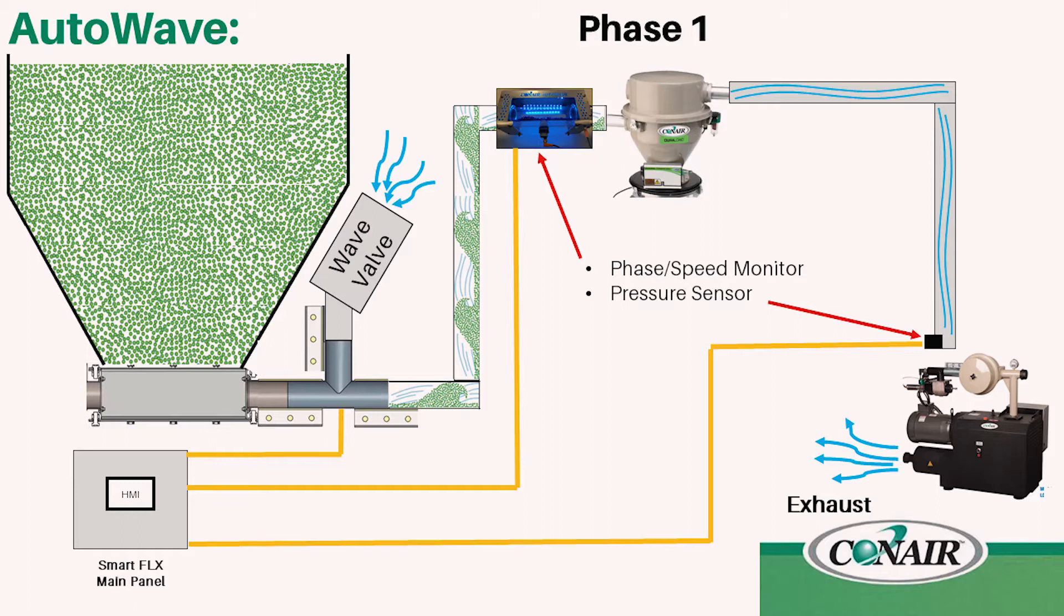I show on the screen now a schematic that shows a vacuum pump that supplies vacuum to a receiver. That receiver is plumbed back to a material source and that material source has a wave valve to operate in wave conveying. In this specific case we're operating in wave stream.